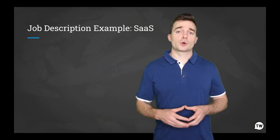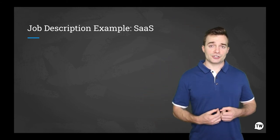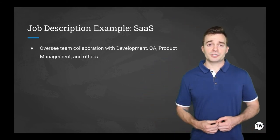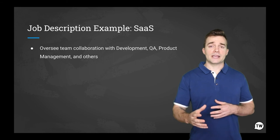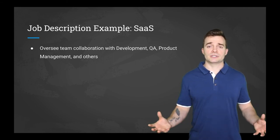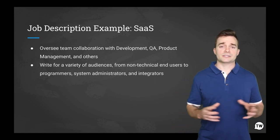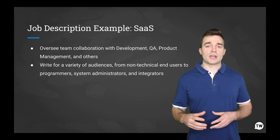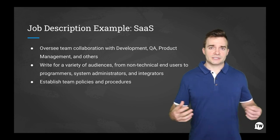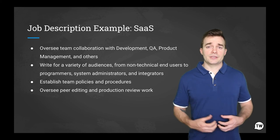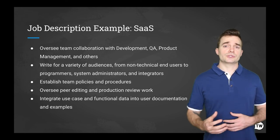Here we have a technical writing position for a SaaS company. Keep in mind that SaaS is one of the fastest growing industries for technical writers and often is one of the best paying industries for technical writers as well. In the job description, we see that applicants should know how to oversee team collaboration with development, QA, and product management and other groups to plan research, write and revise printed and online documentation, including general overviews, tutorials, installation, configuration instructions, training, class materials, and API documentation, and write for a variety of audiences from non-technical end users to programmers, system administrators, and also be able to establish team policies and procedures. And they should also be able to oversee peer editing and production review work and integrate use case and functional data into user documentation and examples.